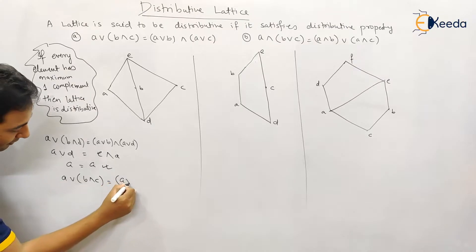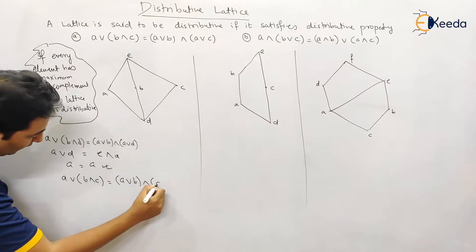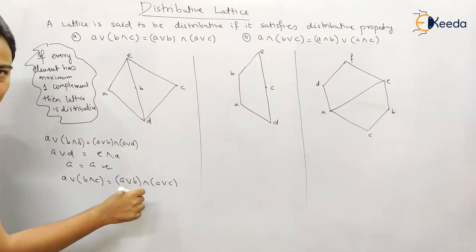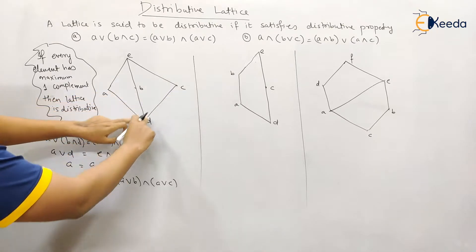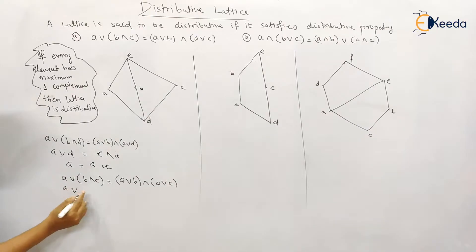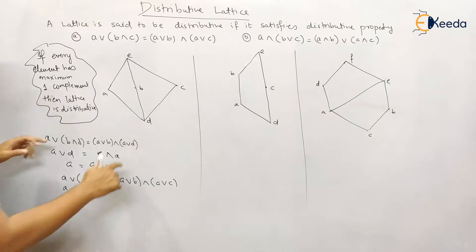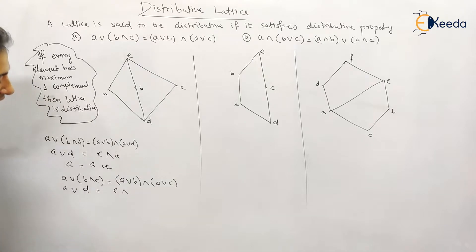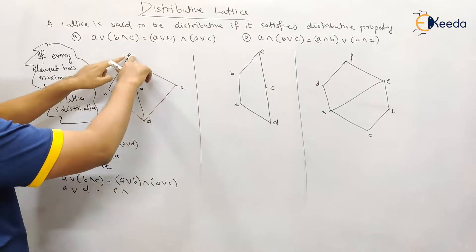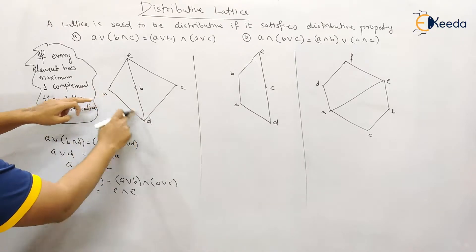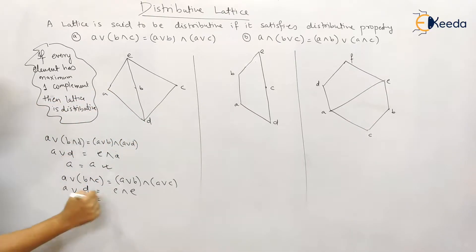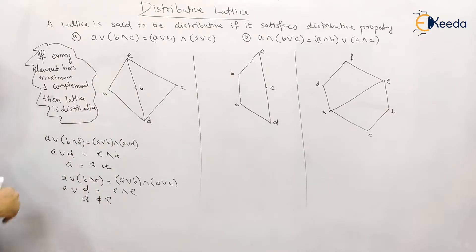Let me check with the a, b, c pair. This will be a join (b meet c) versus (a join b) meet (a join c) — I'm using 'join' and 'meet' here, not 'or' and 'and.' So a join (b meet c): b meet c is d, so a join d. Now a join b is e, and a join c is also e. A join d is a. E meet e is e. Now the property is not getting satisfied.